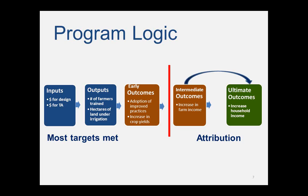Here's where we really push the envelope: because we're committed to reducing poverty through income growth, we try to measure whether our investments ultimately increase household income. This is difficult for two reasons. First, household income is difficult to measure through survey data — evaluators sometimes try to use proxies such as per capita consumption. Second, household income tends to come from various sources; even if farm income increases, it doesn't necessarily mean a direct increase in overall household income, because farmers may reallocate household labor resources from other activities to farming, reducing income from those other activities. Very few organizations try to connect the dots all the way to household income, and that's what we're trying to do.